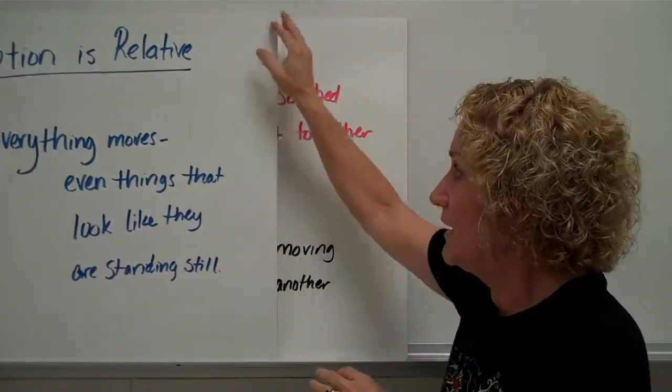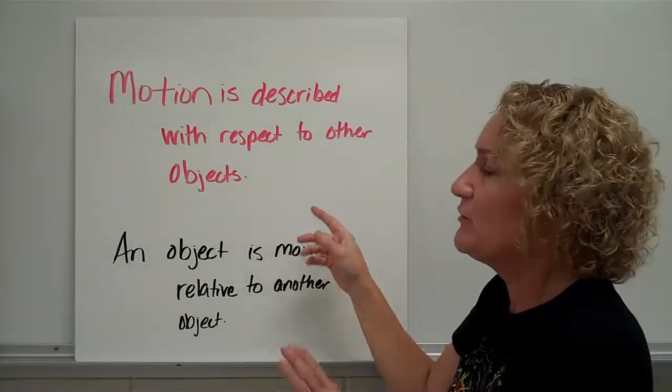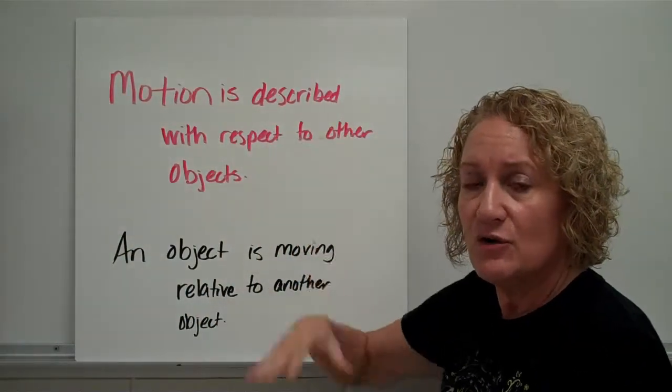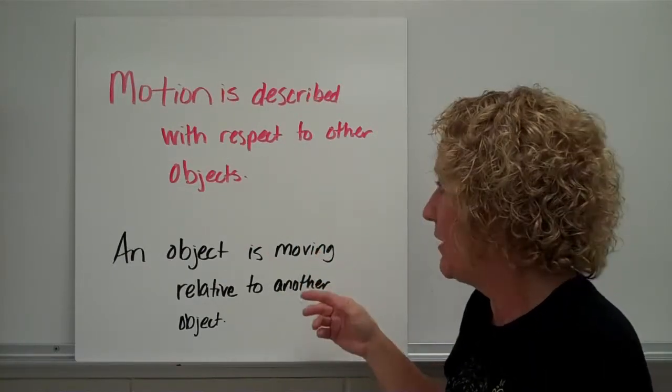But how do you tell if something's moving in your world? Motion is described with respect to other objects. So how do you know my hand is moving? Because the thing behind it is not, and you're actually comparing it.